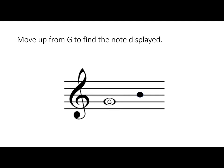Two steps above G. If G is 1, the space above is A. The line in the middle is B.